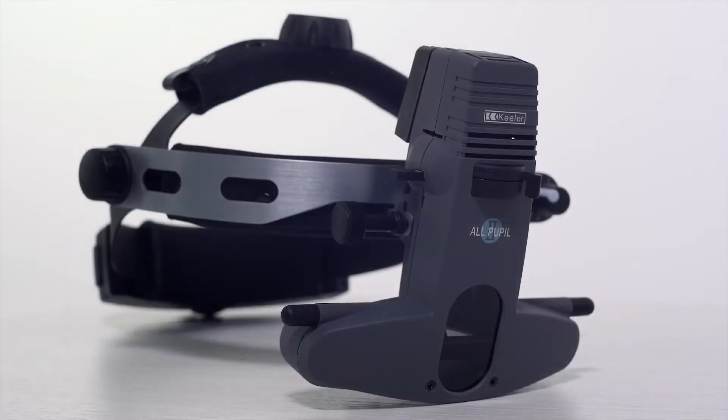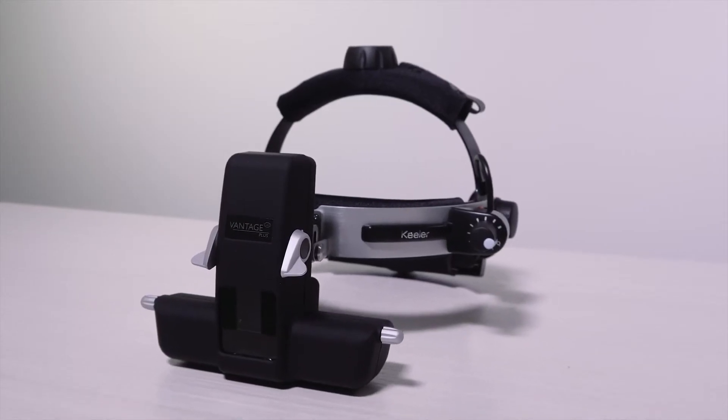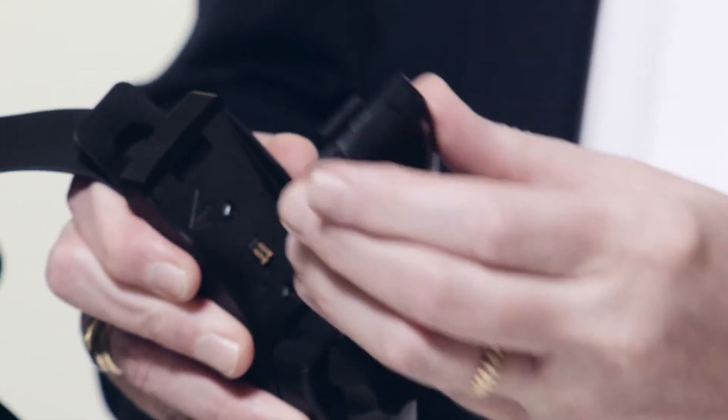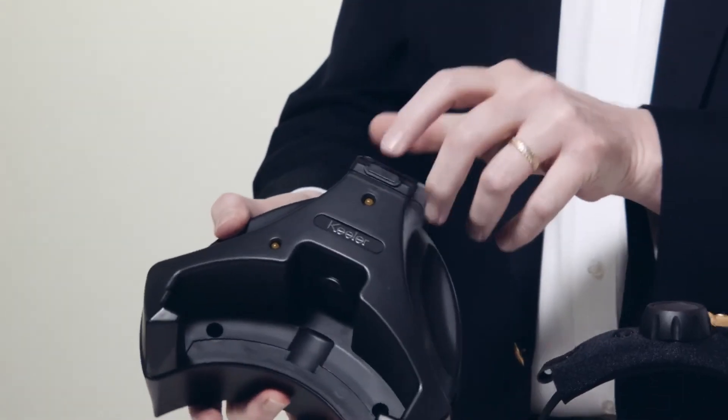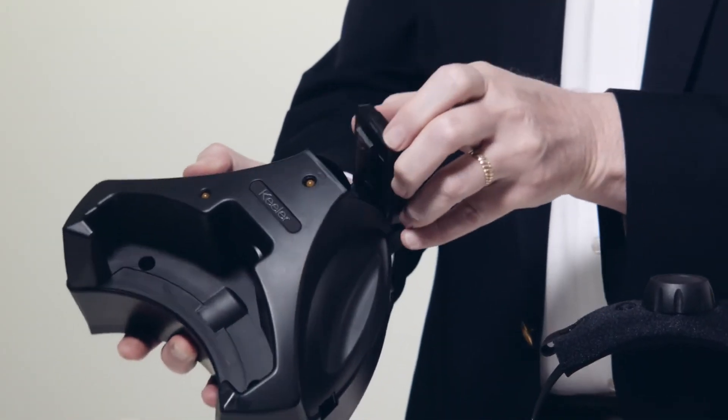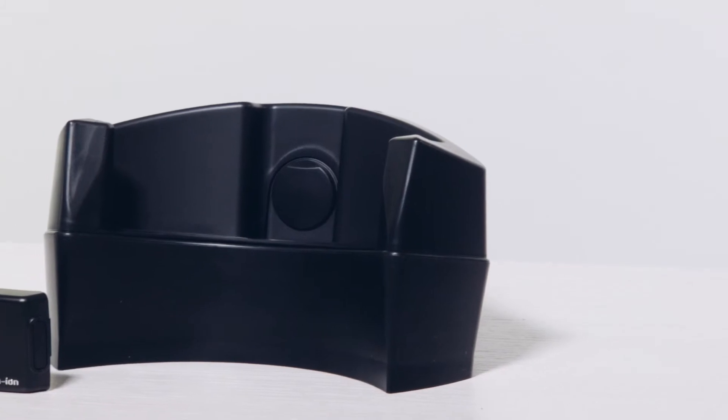The All Pupil 2 and Vantage Plus slimline wireless systems come with two lithium-ion batteries, one in the headset and one in the docking station. The on-time power for each battery is about six hours.